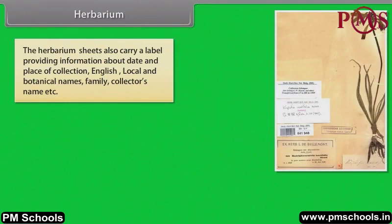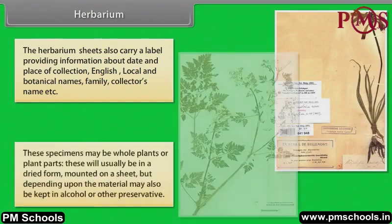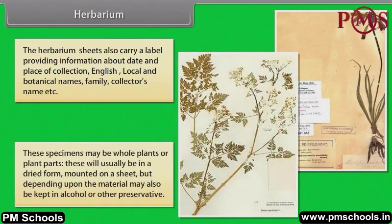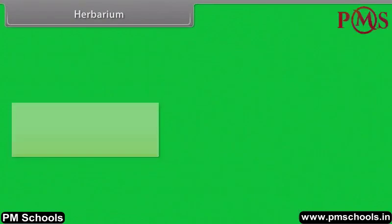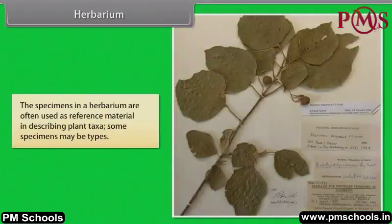The herbarium sheets also carry a label providing information about date and place of collection, English, local and botanical names, family, and collector's name. These specimens may be whole plants or plant parts, and will usually be in a dried form mounted on a sheet, but depending upon the material may also be kept in alcohol or other preservatives. The specimens in a herbarium are often used as reference material in describing plant taxa, and some specimens may be types.